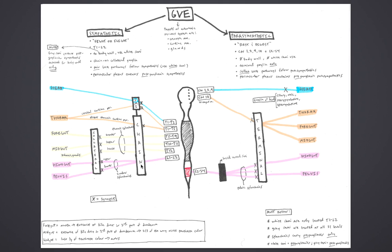Revisiting the perivascular plexus: autonomic nerve fibers reach their targets by traveling on arteries going to the same destination. Since sympathetics synapse at chain or collateral ganglia located near the proximal portion of the arterial tree, they have already synapsed by the time they join the artery — thus the perivascular plexus contains postganglionic sympathetics. Conversely, parasympathetics do not synapse until they reach terminal ganglia right next to or within their target, so the parasympathetics in the perivascular plexus are preganglionic.